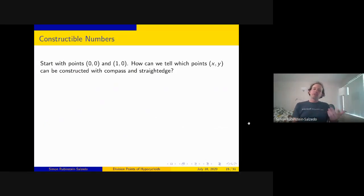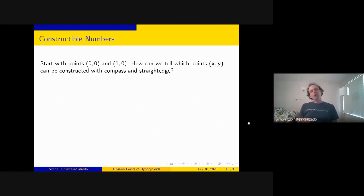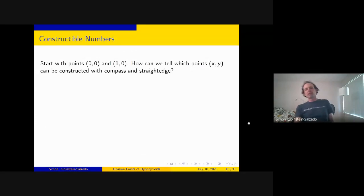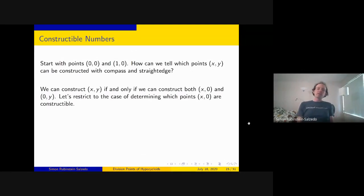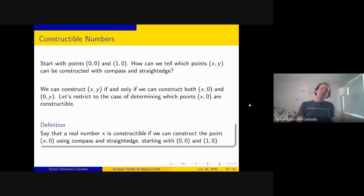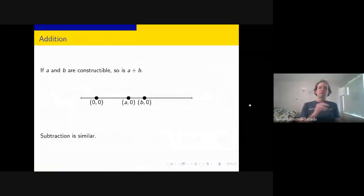To answer these questions we need to know which points are constructible. We start with (0,0) and (1,0) pre-marked. A real number x is constructible if we can construct the point (x, 0) using compass and straightedge starting from those two points. Let's see what we can do: you can add constructible numbers. If a and b are constructible, then a+b is constructible—take the segment from (0,0) to (b,0) and translate it to start from a, giving (a+b, 0). Subtraction is similar.